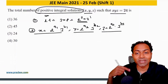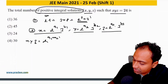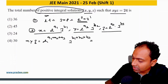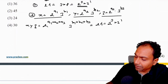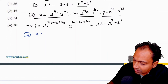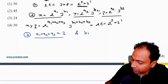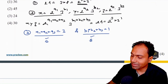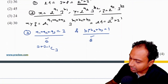Multiplying x·y·z gives 2^(a1+a2+a3) × 3^(b1+b2+b3) = 2³ × 3¹. Comparing exponents: a1+a2+a3 = 3 and b1+b2+b3 = 1. The answer is the product of solutions for each equation: (3+3−1 C 3) × (1+3−1 C 1) = 5 C 3 × 3 C 1.